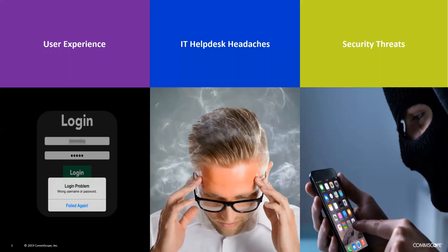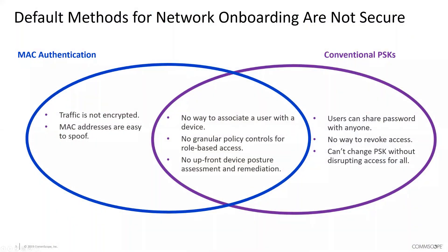Worse still, the default mechanisms organizations use for getting users connected are fraught with security issues that place your confidential data and network at risk. The typical default methods are MAC authentication and conventional PSKs. Each has security flaws unique to it, but they also share common ones. With MAC authentication, wireless traffic between the device and the access point is not encrypted, so it's subject to being spied upon using commercially available network analysis tools.